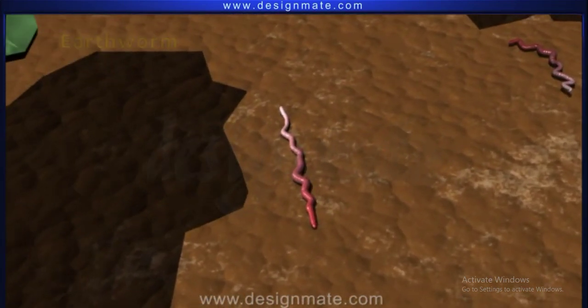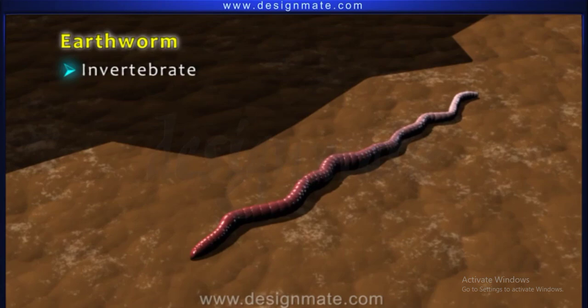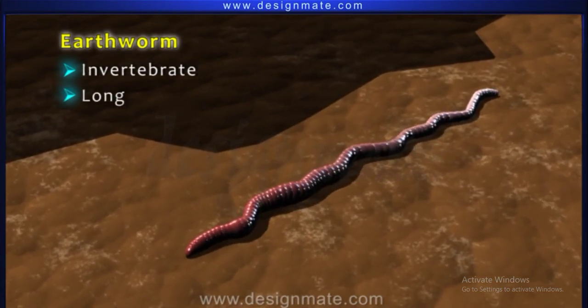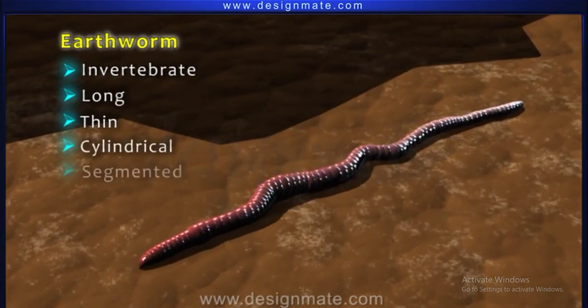Normally found in soil, the earthworm is an invertebrate with a long, thin, cylindrical and segmented body.